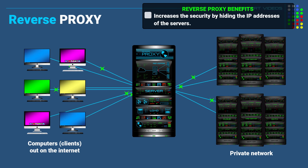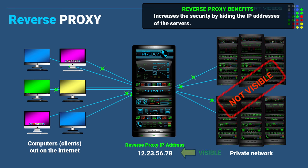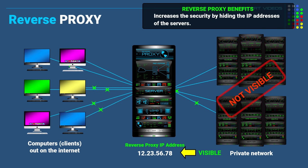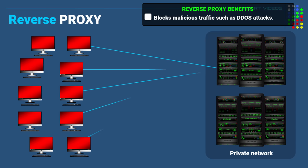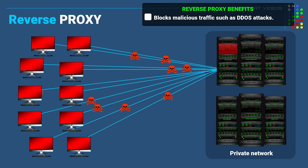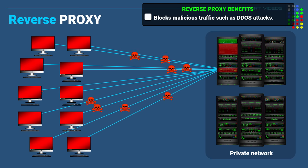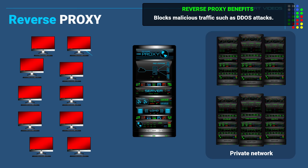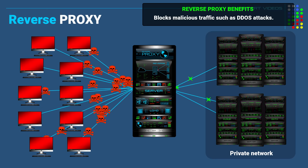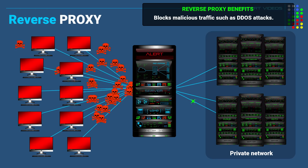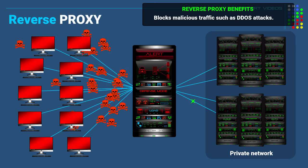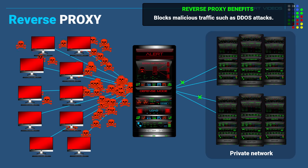So when a computer on the internet wants to access a website on one of these servers, they will not see the IP address of the server — they will only see the IP address of the reverse proxy. Another security benefit is that it will block malicious traffic, such as what happens in a DDoS attack. A DDoS attack is a simultaneous attack from a bunch of computers over the internet targeting a specific server by its IP address. A reverse proxy is an effective defense because it sits between the client and the server acting like a buffer to stop the attack from ever reaching the server, and it also hides the server's IP address.